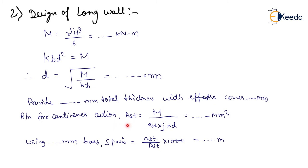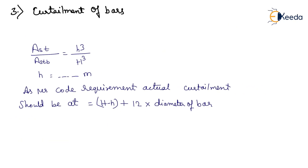AST is calculated using the formula: M upon (sigma ST into J into D), in mm². Using the chosen bar diameter, spacing S equals (small AST upon capital AST) into 1000, in mm. Provide bars at the calculated center-to-center spacing in the vertical direction near the water face of the tank.